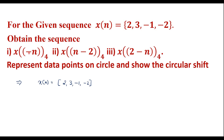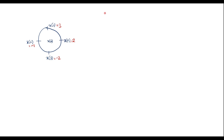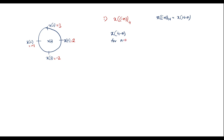Now let me obtain the first example, that is x[-n]₄. We know that x[-n]₄ can be represented as x[(4-n) mod 4]. Therefore I can represent this as x[4-n]. For n=0, its value will be x[4], which is nothing but x[0], so x[0] = 2.